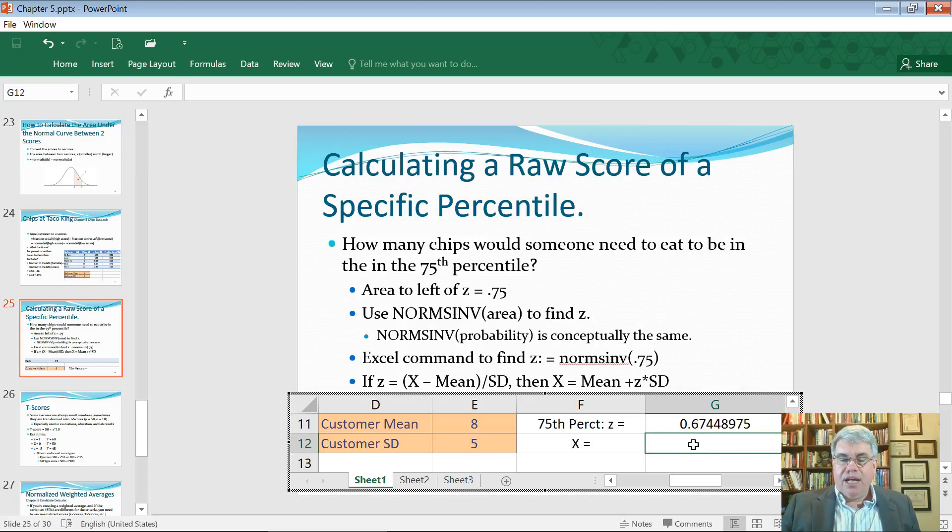So that's the z-score that cuts off the 75th percentile in a normally distributed function. Now we need to find the raw score, the number of chips that corresponds to. Remember that z's defining equation is the raw score, the number of chips, minus the mean, minus the average number of chips. That difference divided by the standard deviation of the number of chips people have.